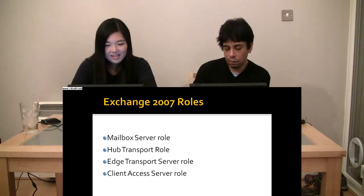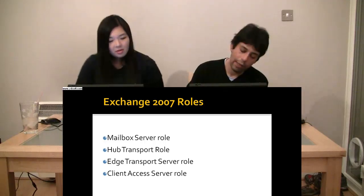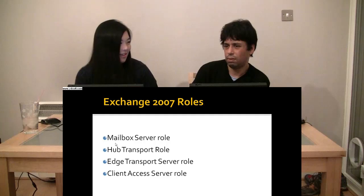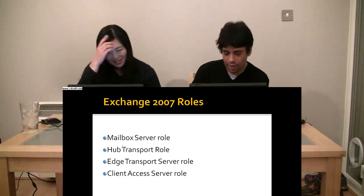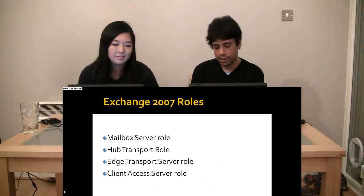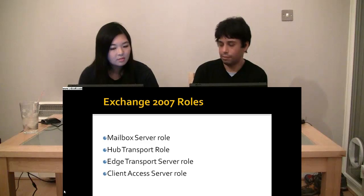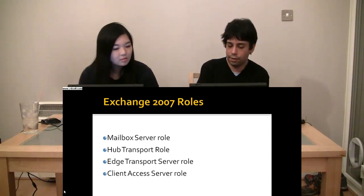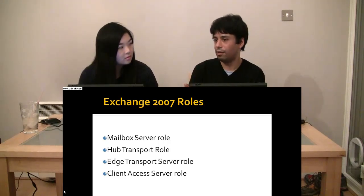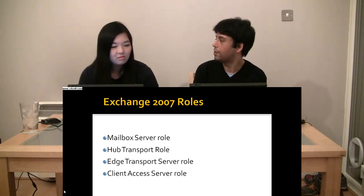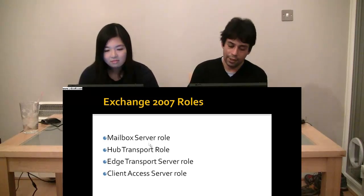So mailbox role — we talked a lot about high availability. Hub transport, that's easy. Edge transport, that's easy. Client access server — think about how people are going to access it. It's going to be via OWA. So if they're trying to go to one client access server and that fails, they're going to need to go to the other one. You could give users a fallback URL, but you've never heard of that happening. Network load balancing would be a solution to that. DNS — you could use round-robin DNS as well. Network load balancing would be a nicer solution. So that's what you could do in 2007 and pretty much 2010.